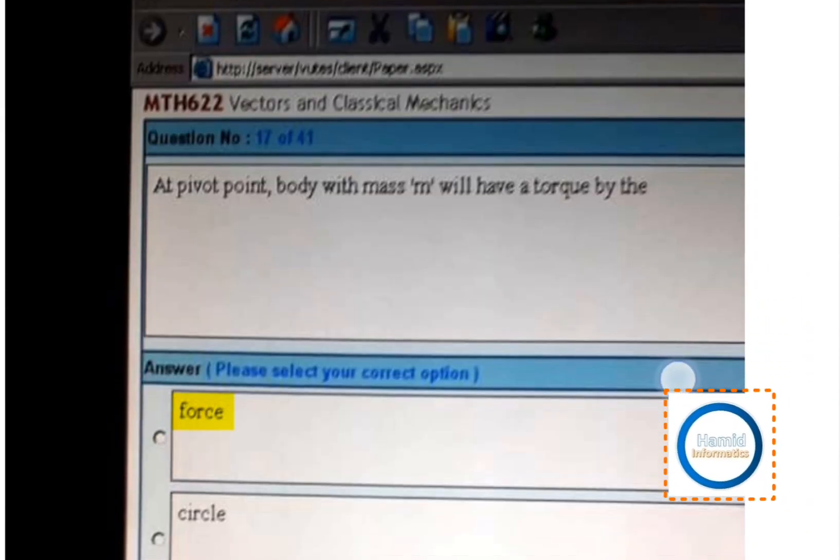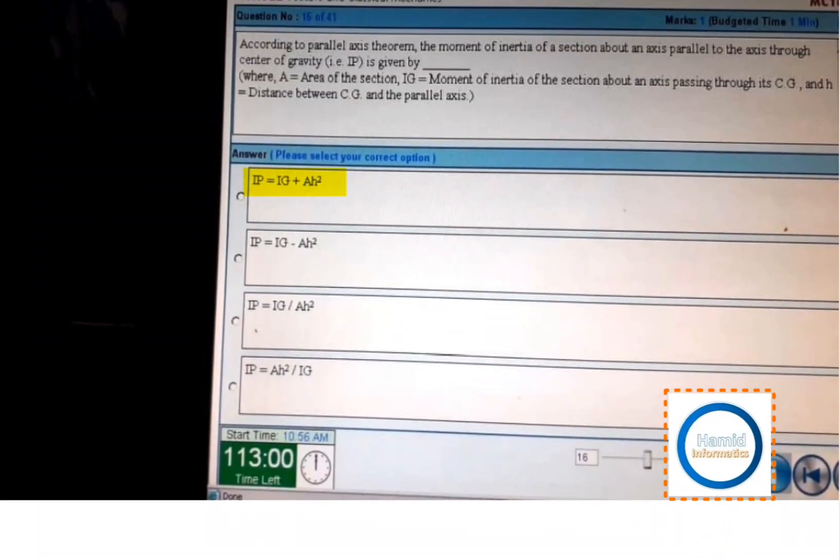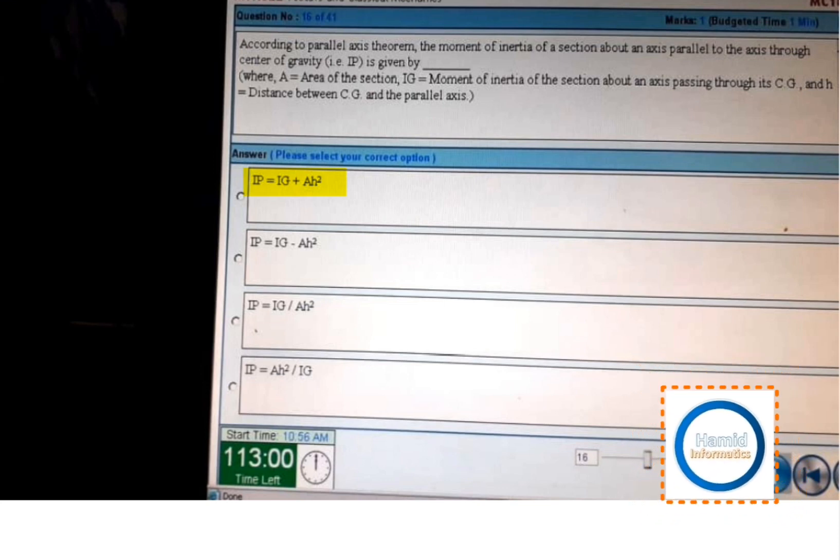Next is a pivot point body with mass m will have a torque by the force. According to the parallel axis theorem, the moment of inertia of a section about an axis parallel to the axis through center of gravity.